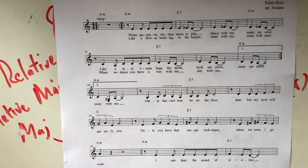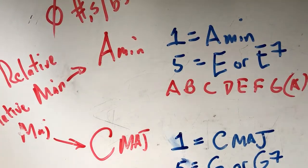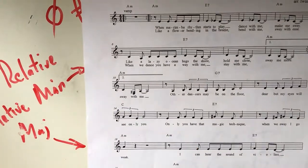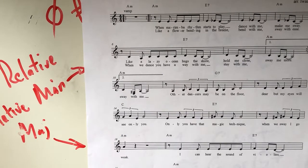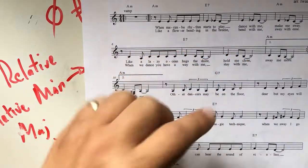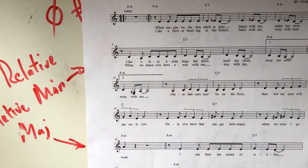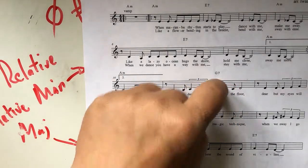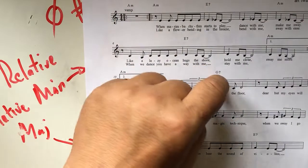And what's G7 the V of? G is the V of C. So we're now temporarily in the key of C. 'But my eyes will look where we go, C, only you' — so this whole bridge part is in the key of C. Our ears hear that because the V chord's job is to push us there. This is not the V chord for the key of A minor; it's the V chord for C.